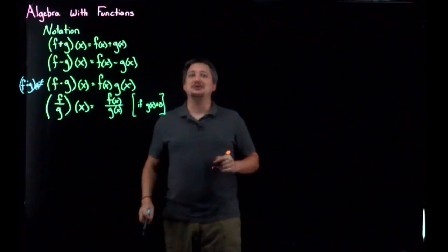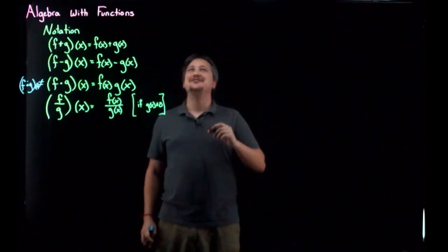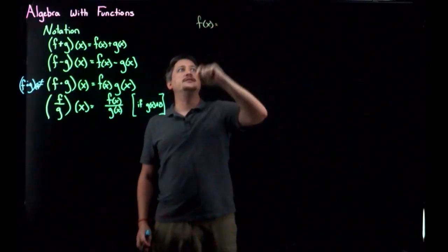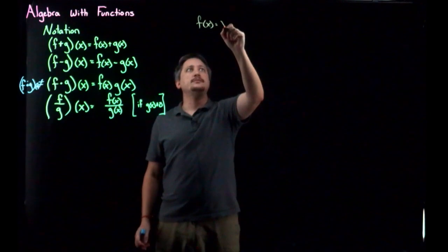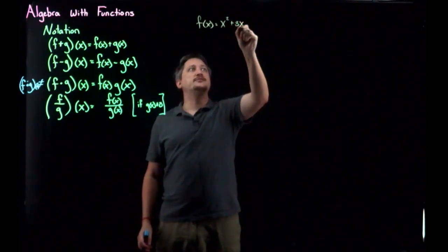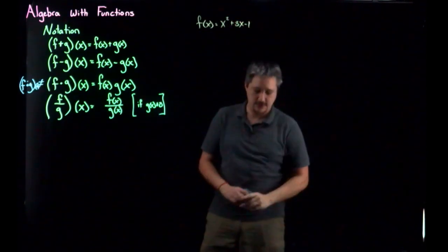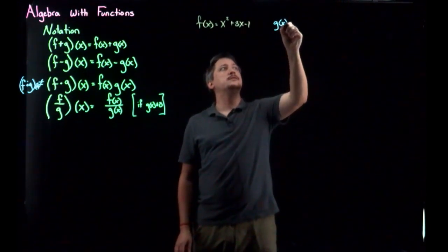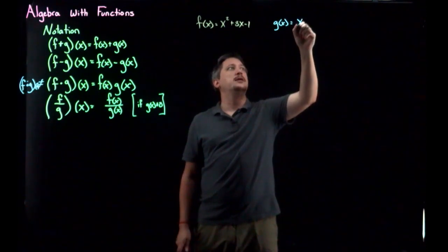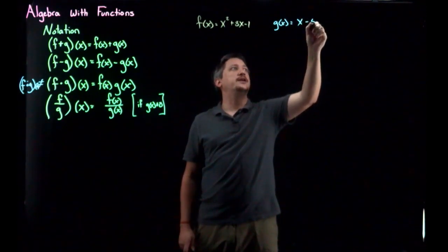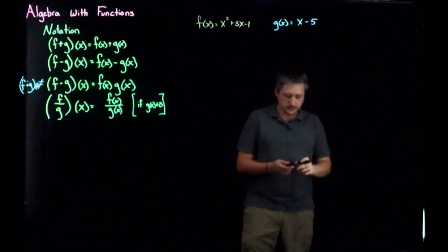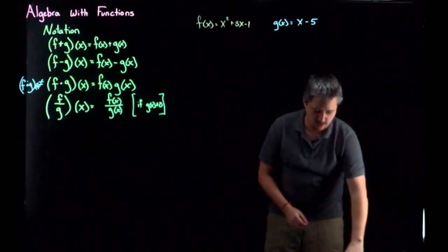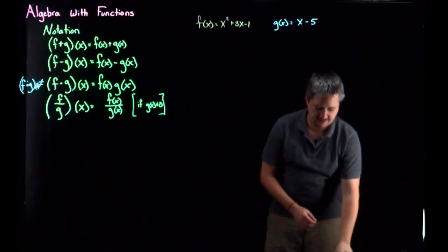Let's say we have F of X equals X squared plus 3x minus 1, and G of X equals X minus 5. Let's go through the various types.